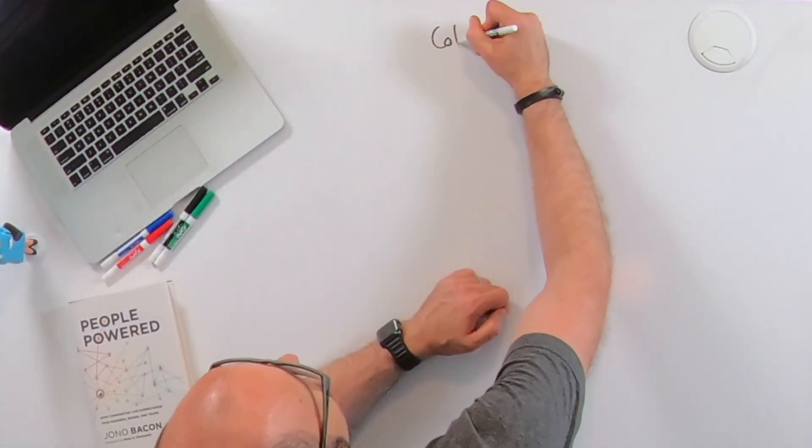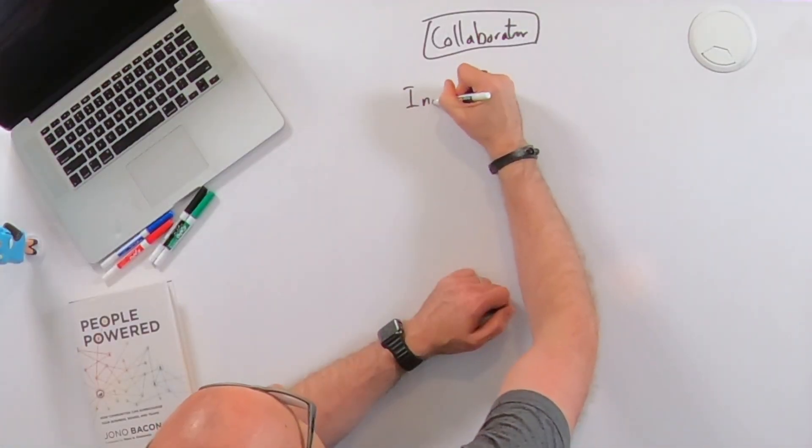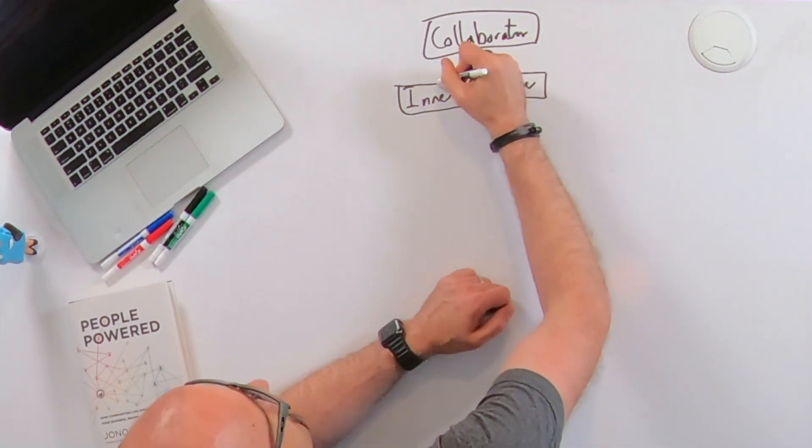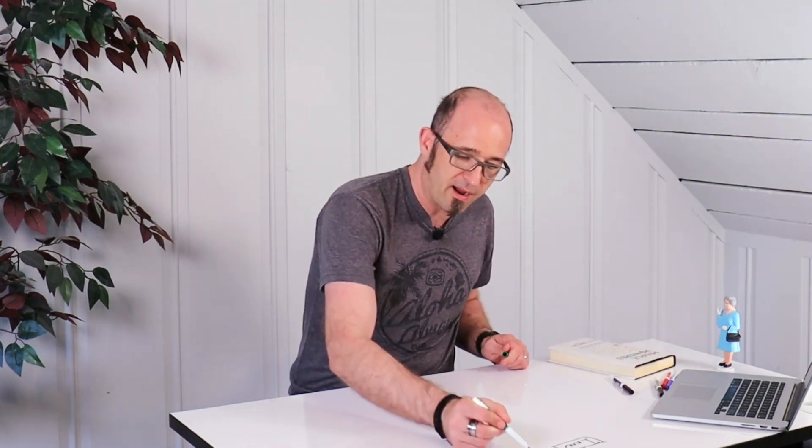Now, I do want to apply a little bit of context to make sure we're building the right kind of onboarding experience. So in a previous video, I talked about the three models of how we build effective communities. And one of those models is called the collaborator model. This model is broken into two types. You've got inner and outer.